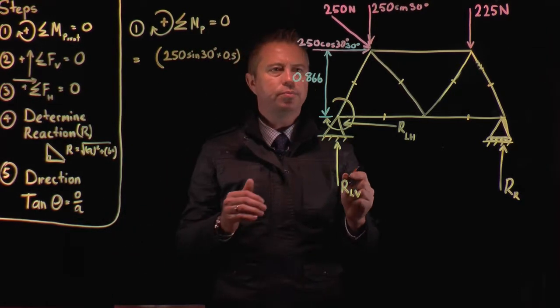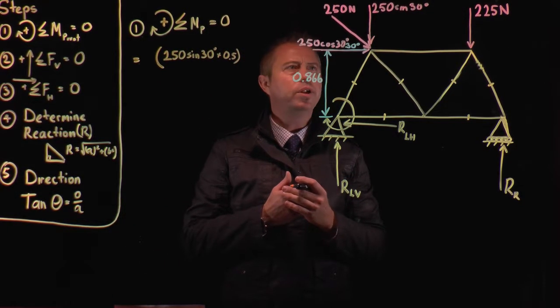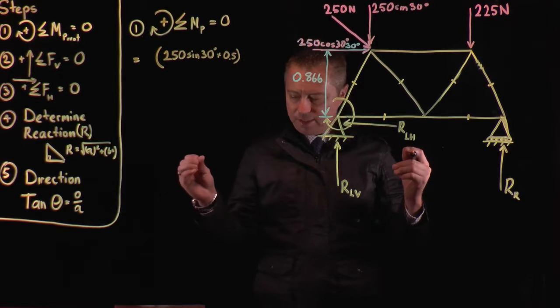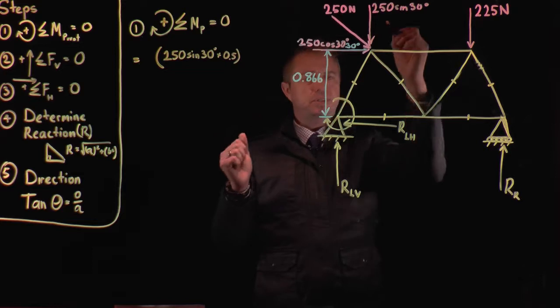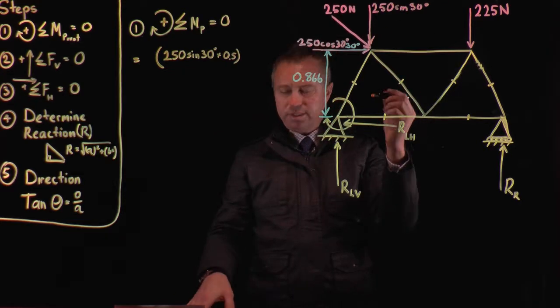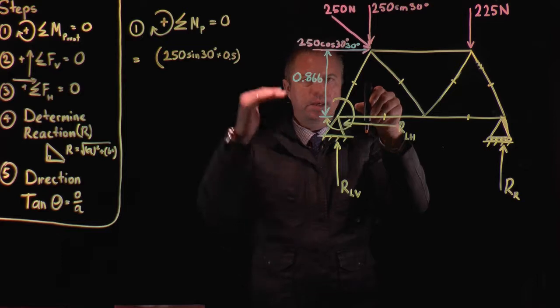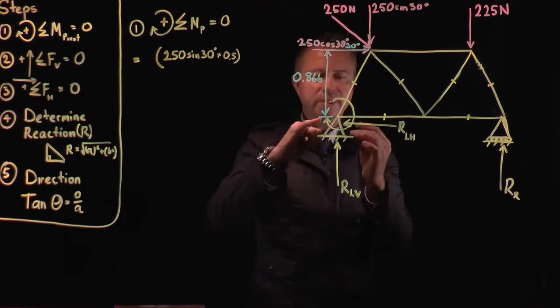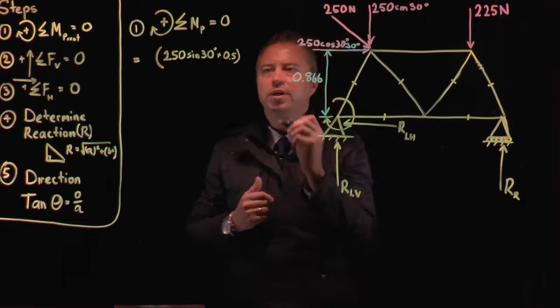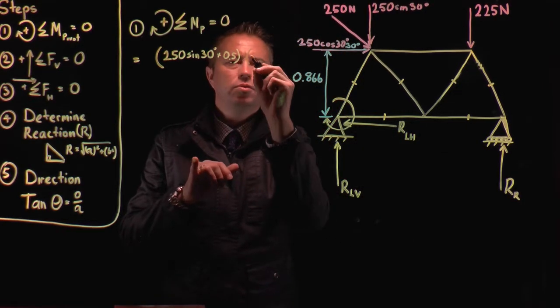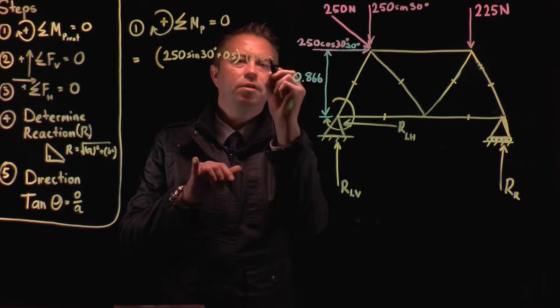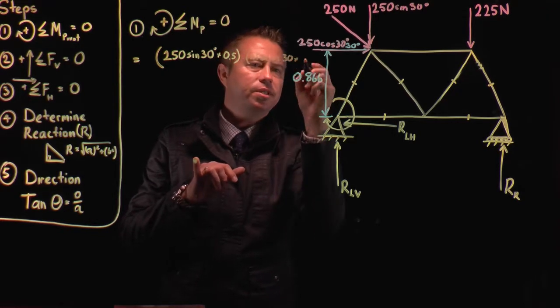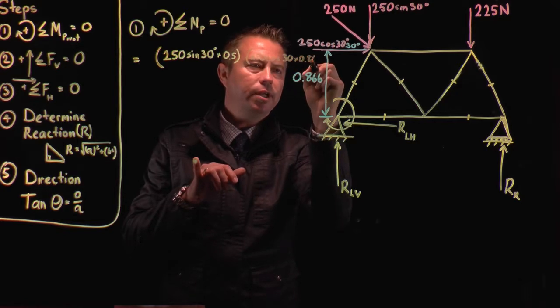Then we move across and look at what next we've got. So we've got our sin, then we come over and look at 250 sin, where's our next one? Then we've got cos, so we've got this one here, and we've also got our 250 cos. The perpendicular distance is already given there. So we can go 250 cos 30 times that distance there, which is 0.866.